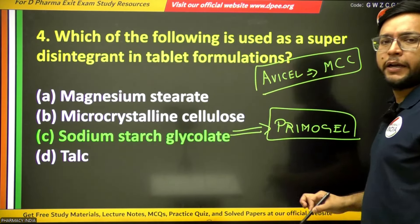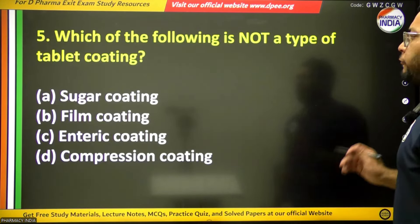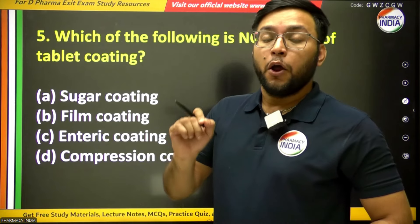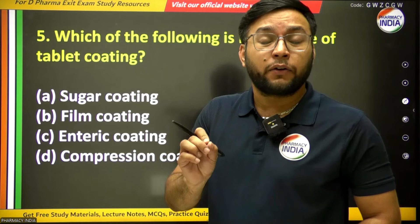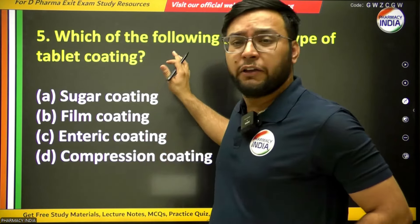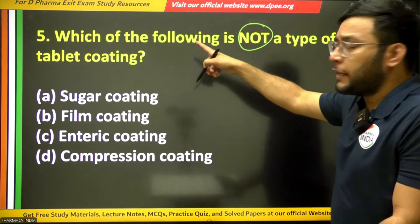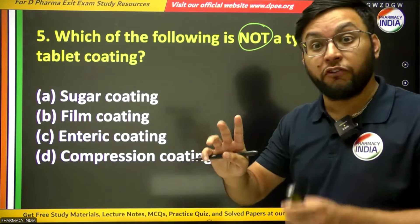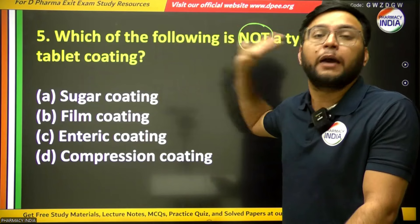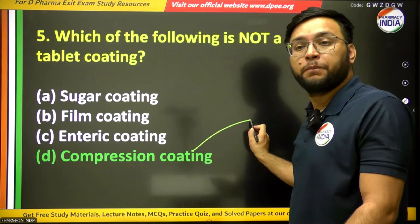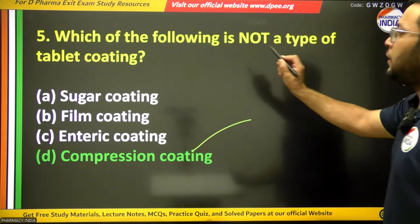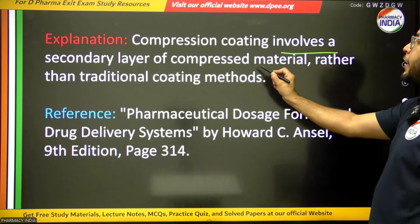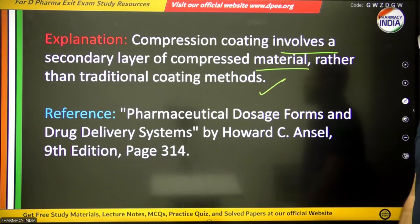The fifth question asks which of the following is NOT a type of tablet coating. Options: sugar coating, film coating, enteric coating, and compression coating. Students, be careful with 'not' in questions — it is meant to confuse. Sugar coating, film coating, and enteric coating are all types of tablet coating. Compression coating is NOT a type — it involves a secondary layer of compressed material rather than a traditional coating method.